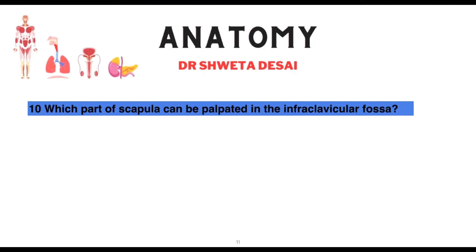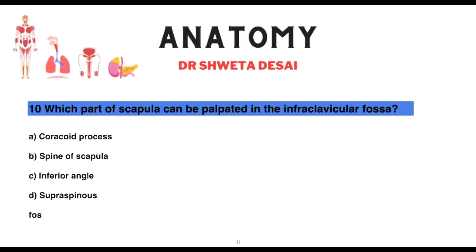Which part of the scapula can be palpated in the infraclavicular fossa: coracoid process, spine of scapula, inferior angle, or supraspinous fossa? The coracoid process can be palpated in the infraclavicular fossa.